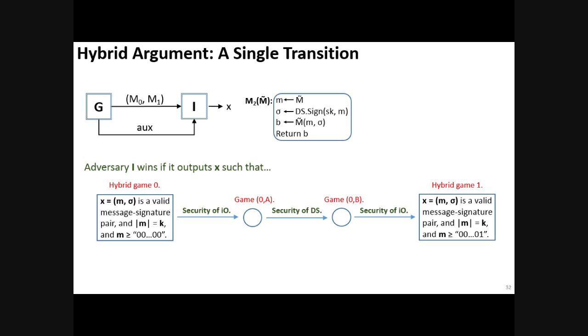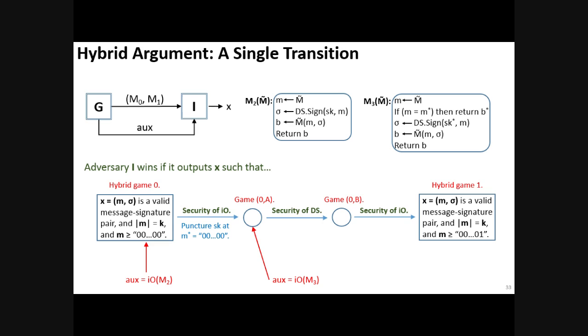Now, how do we do these three transitions in between every two hybrid games? We'll use a technique which again mimics the PPRF plus I.O. technique by Sahai-Waters where the first transition will be by security of I.O., the second transition digital signature scheme, the third transition again I.O. Hybrid game 0 uses auxiliary information that is an obfuscation of M2, whereas when switching to hybrid game 0-A, we replace circuit M2 by circuit M3. Circuit M3 is functionally equivalent to circuit M2, except that its secret key is punctured, and this punctured input is processed separately in the second line, and so we can use security of I.O.